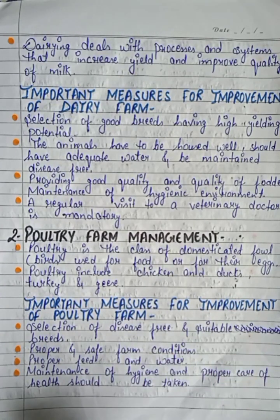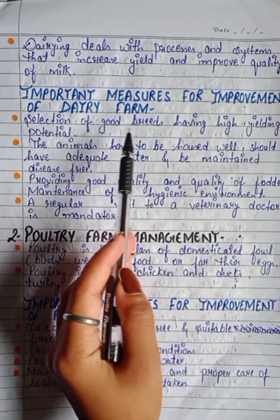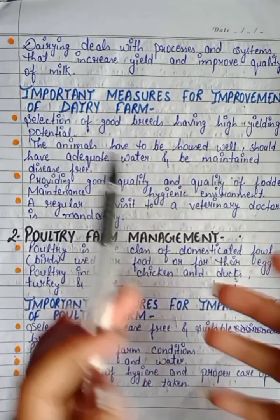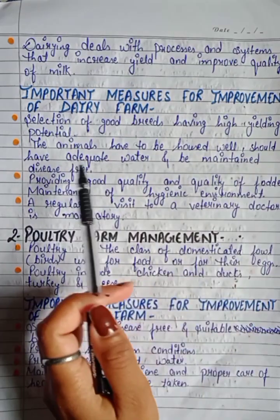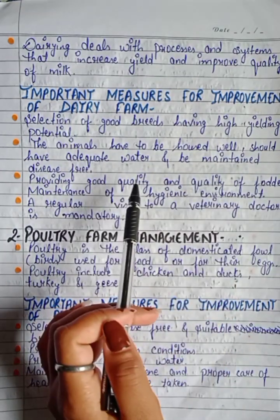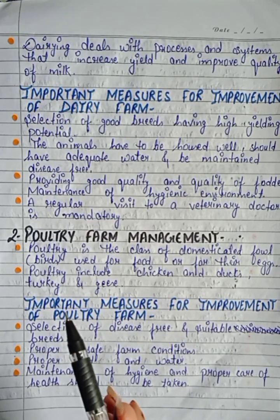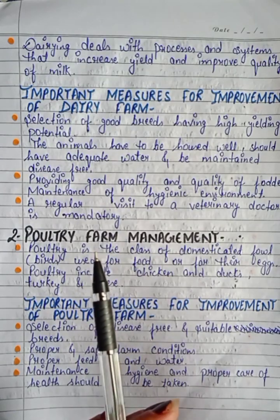Important measures for improvement of dairy farms: first, selection of good breeds having high yielding potential. Second, the animals have to be housed well, should have adequate water, and be maintained disease-free — we keep clean water and proper maintenance so animals don't have any disease.